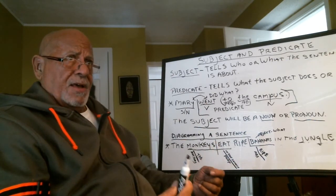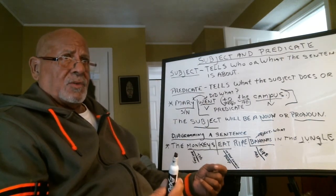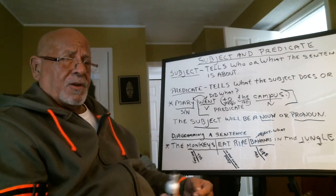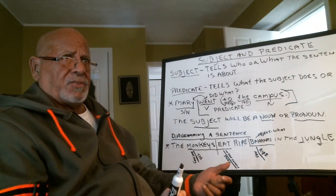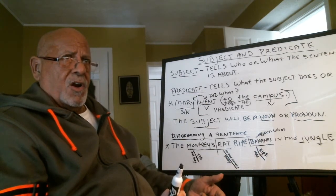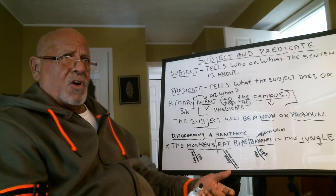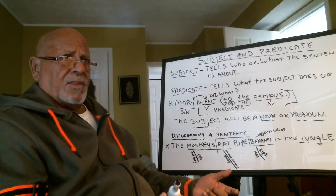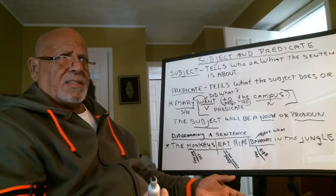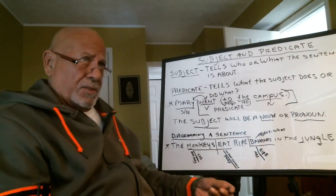In a compound sentence you have two subjects, two verbs, and two predicates. In complex sentences it's the same thing — you have a subject, verb, and predicate in one clause, and a subject, verb, and predicate in the other clause. One clause is a dependent clause and the other is an independent clause.